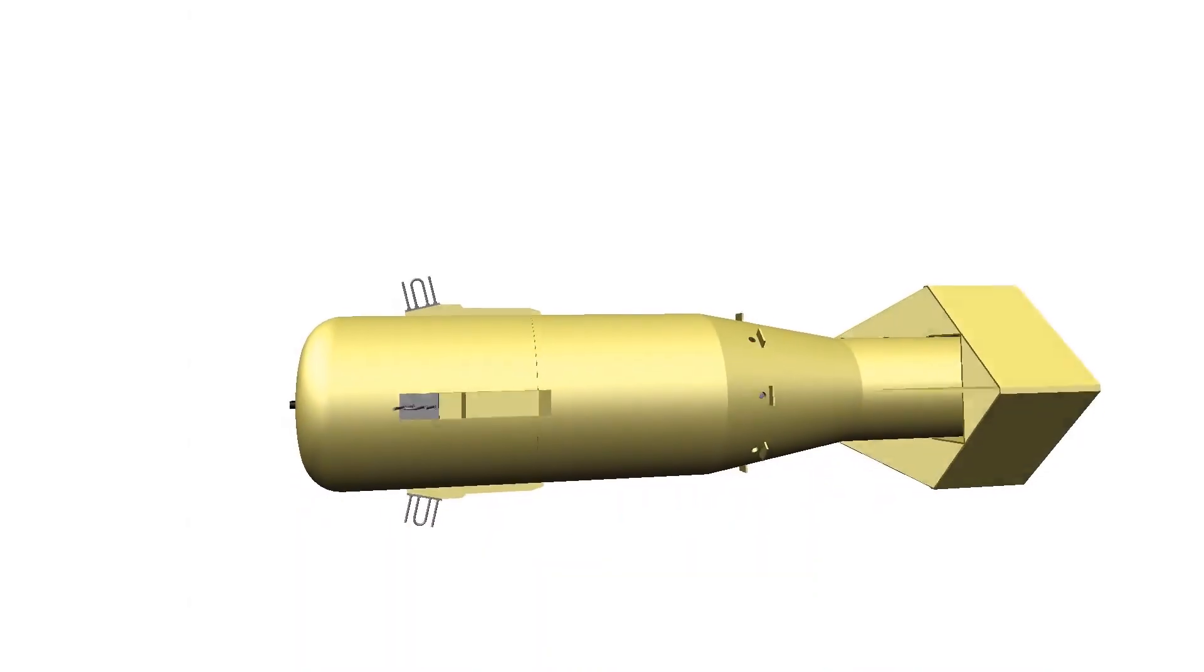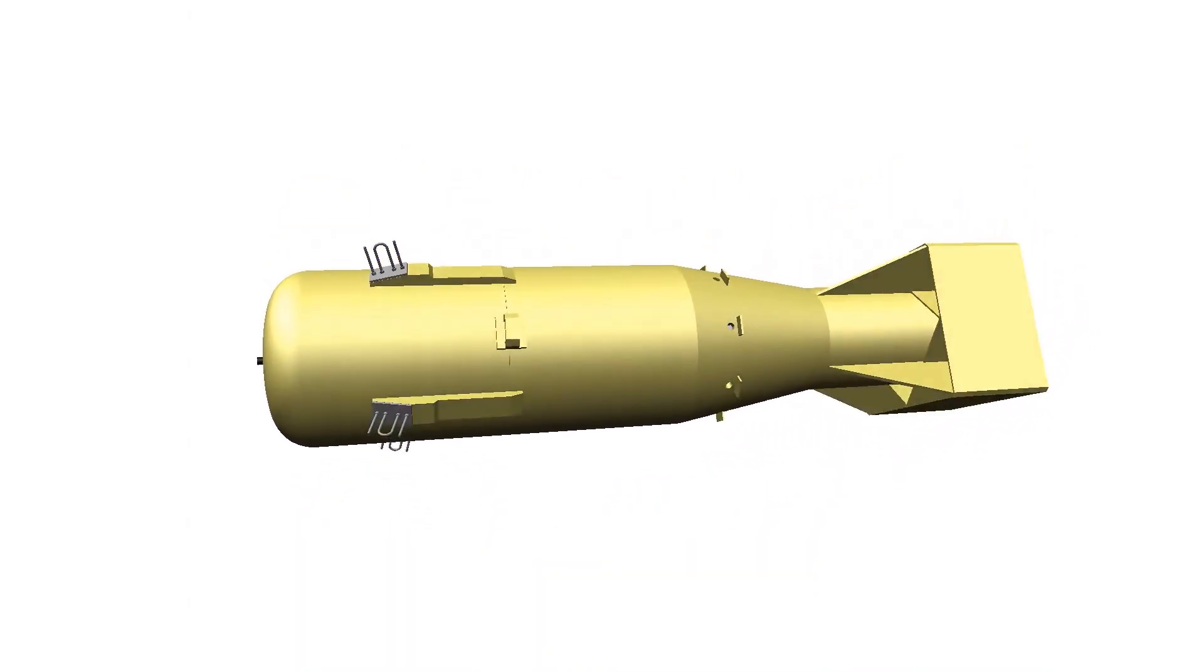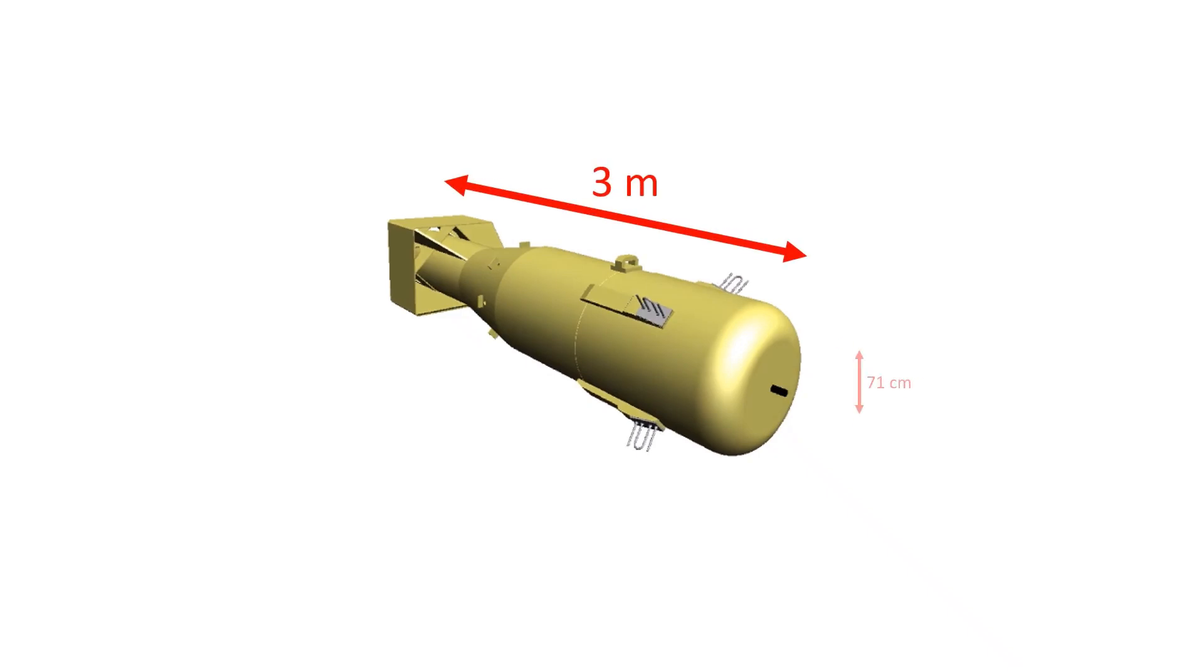Let's discover how this nuclear bomb works. The dimensions of Little Boy are approximately 3 meters in length and 71 centimeters in diameter. Its weight is about 4,400 kilograms.